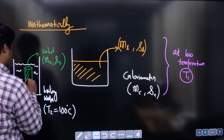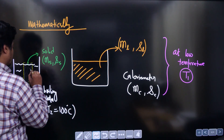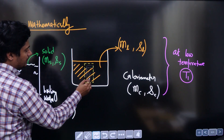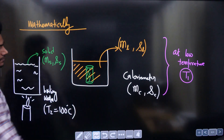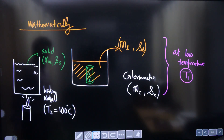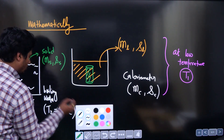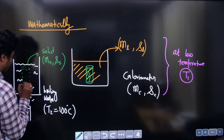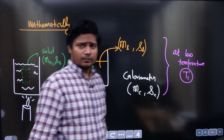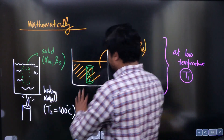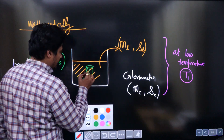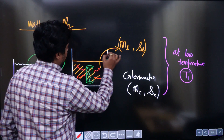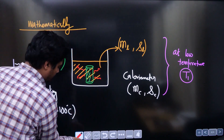When the solid reaches 100 degrees centigrade, you place it inside the calorimeter containing the liquid. The solid will release energy, the temperature of the liquid is raised, and you measure the final temperature. After some time, you wait and observe the equilibrium.